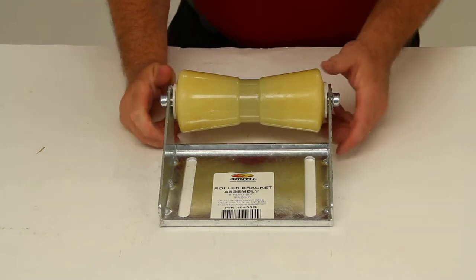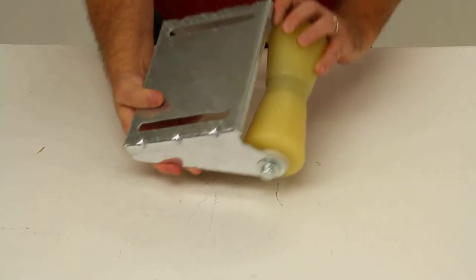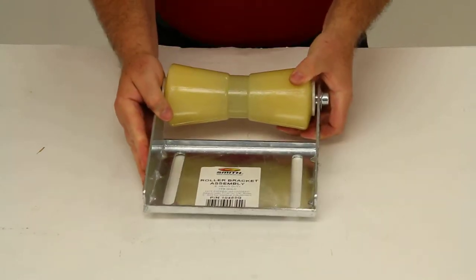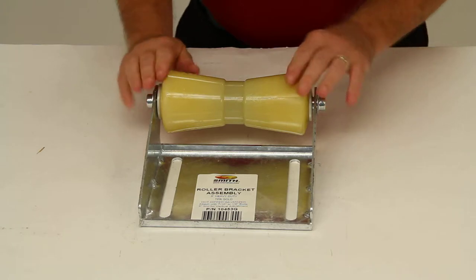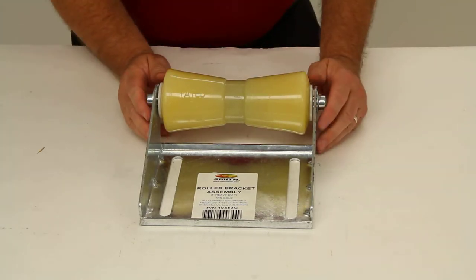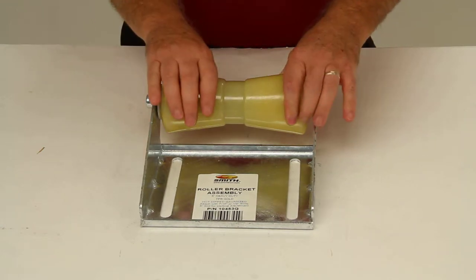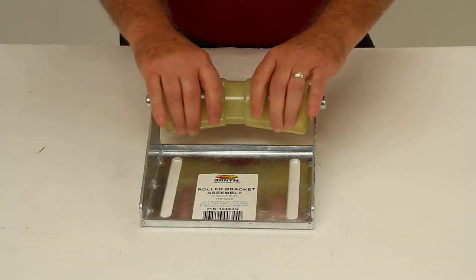Today we're going to review part number CE10453G. This is the CE Smith Deep V keel roller assembly for boat trailers. This roller assembly helps support your boat's keel for easy loading and safe transport on your trailer.